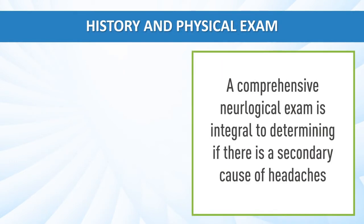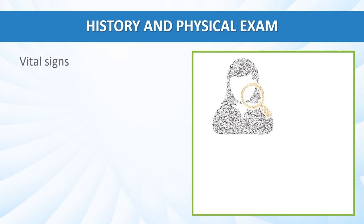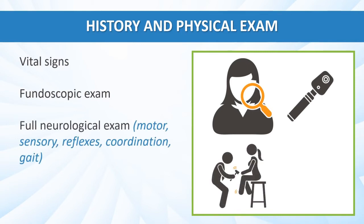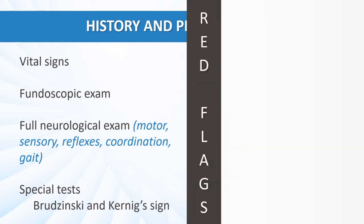A comprehensive neurological exam is integral to determining if there is a secondary cause of headaches. Key aspects are vital signs, fundoscopic exam to assess for papilledema, any focal neurological exam findings, and special tests such as Rudinsky's and Koenig's signs for suspected meningitis.